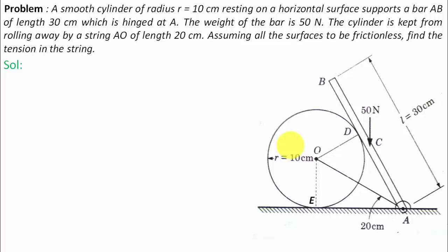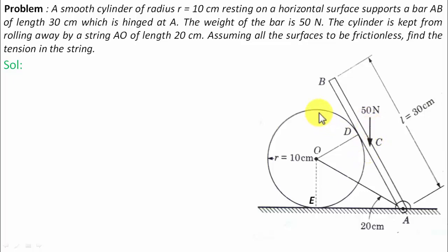Assuming all surfaces to be frictionless, find the tension in the string. Let us try to understand this arrangement. There is the cylinder kept on the horizontal surface, and the point of contact is at E. There is a bar AB resting, with the point of contact at point D. Due to the bar's weight, the cylinder may tend to roll to the left, but it is prevented by string OA of length 20 centimeters, which develops tension T. The red color forces act on the cylinder and the purple color forces act on bar AB.